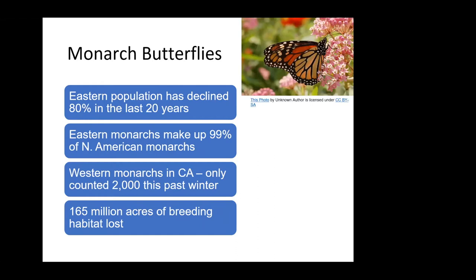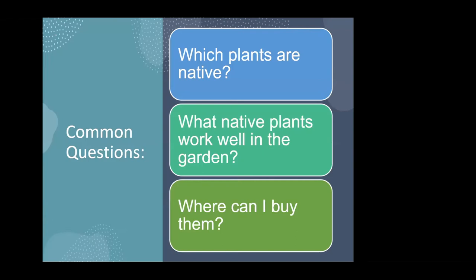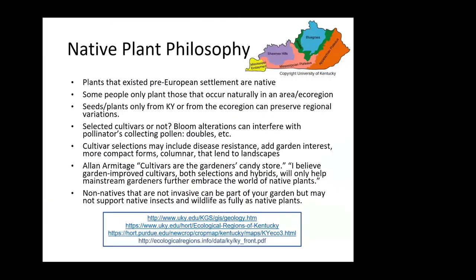The common questions are: which plants are native, what native plants work well in the garden, and where can I buy them? Native plants are plants that existed pre-European settlement. Some people want to plant only ones found in their specific ecoregion, but even using garden-improved cultivars that are native will help mainstream gardeners embrace native plants and get more planted out there to support the ecosystem. You can decide how particular you want to be about where your native plants come from — whether it has to be your specific region, the state of Kentucky, or surrounding states. But anything you do to help with diversity is probably going to be beneficial.